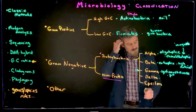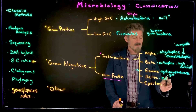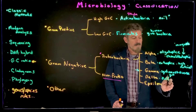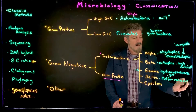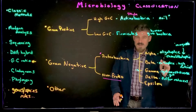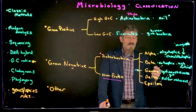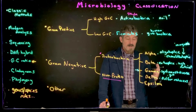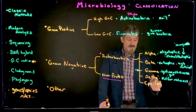Delta-proteobacteria is a smaller group. These tend to be sulfur reducers. The characteristics given are general for many members of the group — there will be exceptions to all of these.